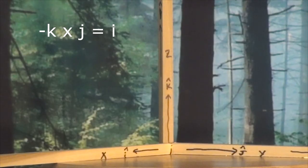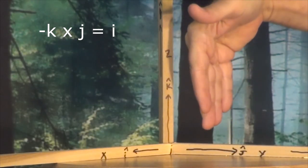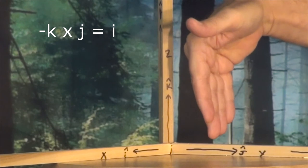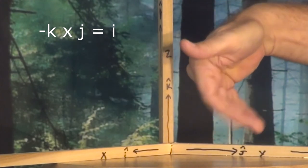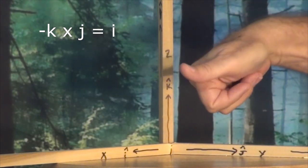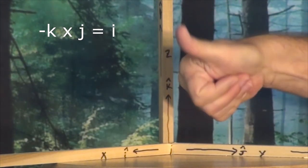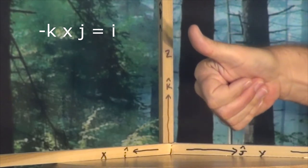For minus K cross K, fingers in the direction of negative J, curl them toward K, and our thumb points in the minus I direction.